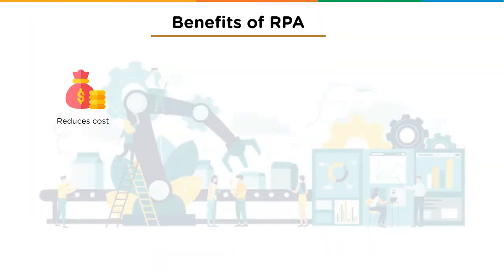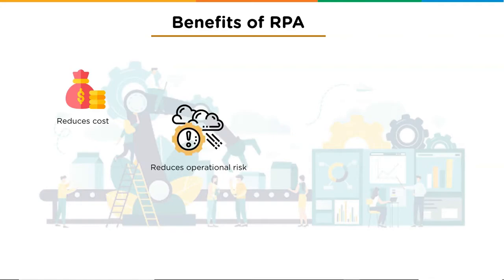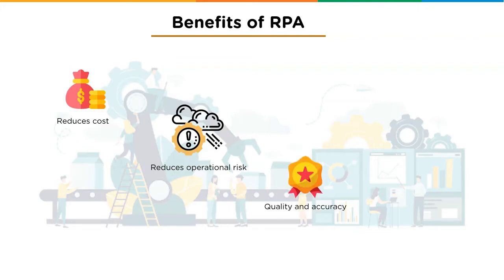Benefits of RPA include: cost reduction — automating tasks can achieve cost savings of almost 30%, with software robots costing far less than full-time employees. Reduced operational risk — companies often outsource busy work to external parties, which carries the risk of human errors. RPA brings work in-house, reducing operational risk through automation.